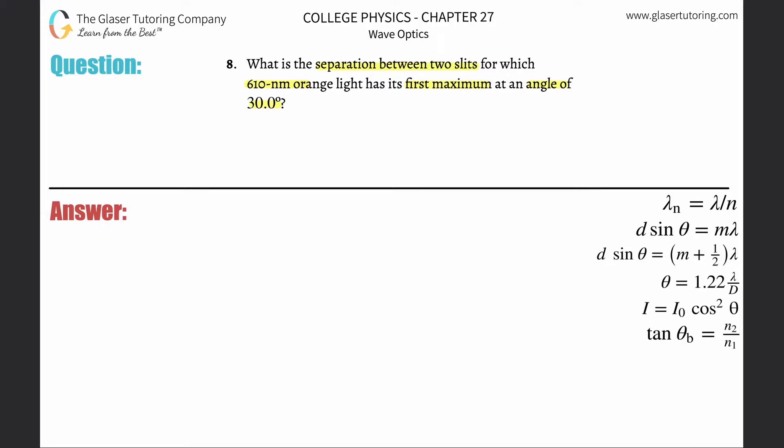Alright, so whenever they start talking about maximums, they're talking about constructive interference. When you're dealing with constructive interference for a double slit experiment, you're going to be using this formula on the right-hand side, the second one from the top.